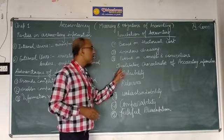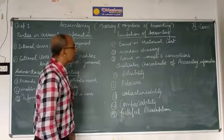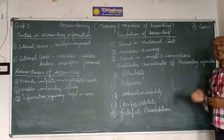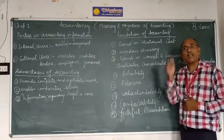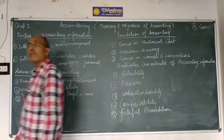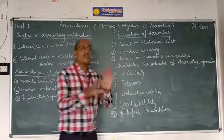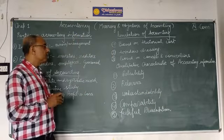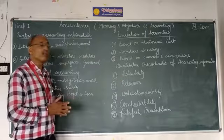The last topic is qualitative characteristics of accounting information. The first characteristic is reliability — accounting information should be furnished in such a way that it is reliable and trustworthy. The second is relevance — the accounting information should be relevant to the data being requested. If it is not relevant, then it has no value.